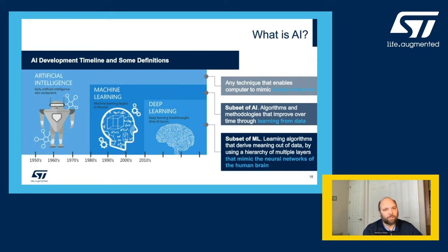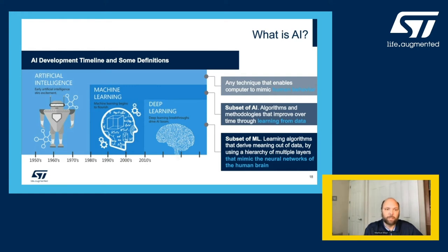The term artificial intelligence was first created in the 1950s, and the study of AI has gone up and down during the last decades. Now, we are in the most recent AI wave. This wave is not only a result of more advanced hardware and algorithms, but most importantly, it is big data. Data is the cornerstone of AI — the more data you have, the better the performance you will achieve.